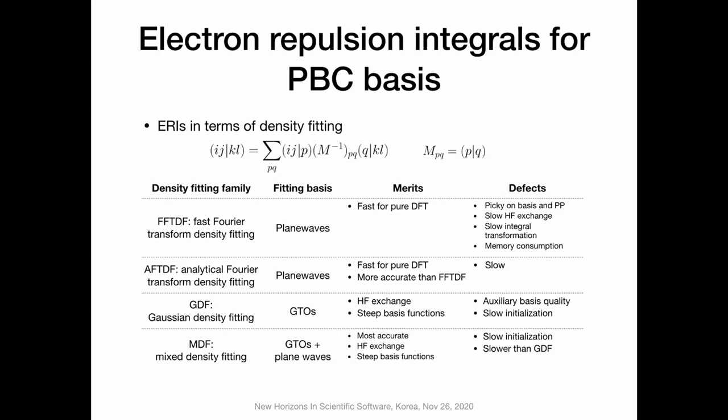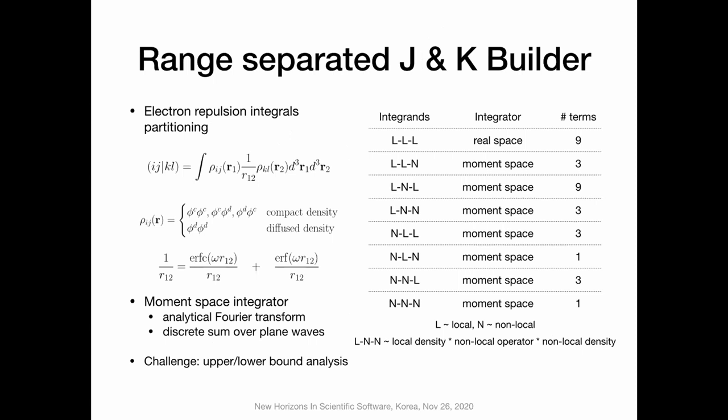When people use density fitting integrals in real applications, they still complain that it's not able to target large Hartree-Fock type exchange in PBC calculations. That brought me to think about building another way to compute exchange. It was not a really new method — similar ideas can be found in CP2K or Crystal packages — where we basically compute the integrals in both real space plus momentum space.